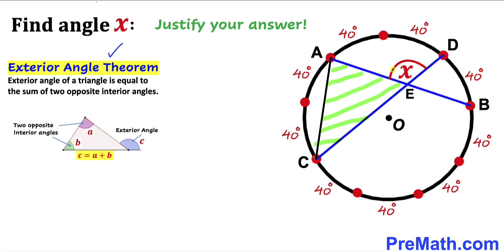Now let's recall this exterior angle theorem once again. According to this theorem, this angle X is going to be our exterior angle, whereas these angles are going to be our opposite interior angles. Let me call this angle alpha and this angle beta.